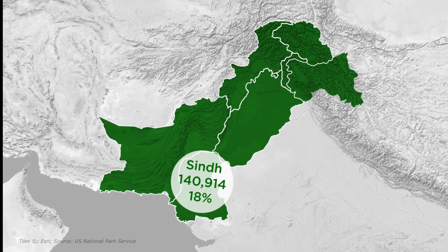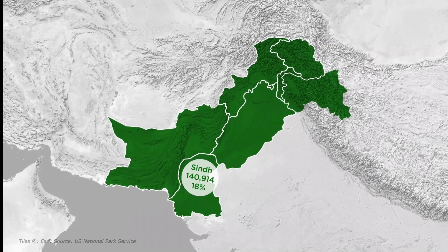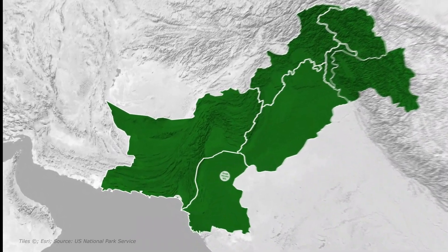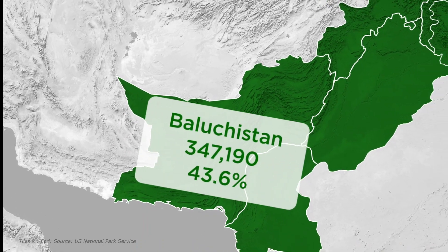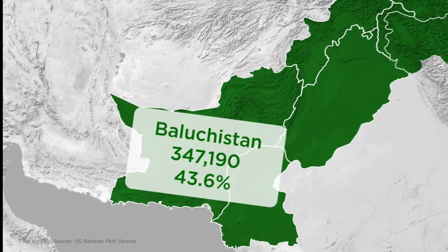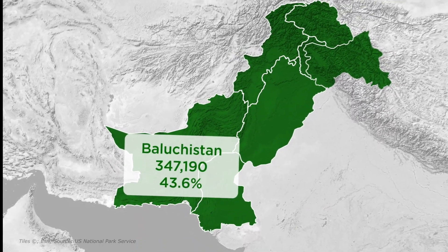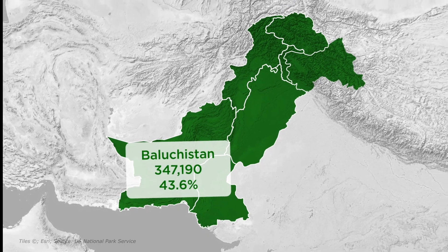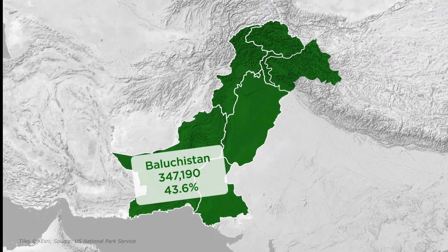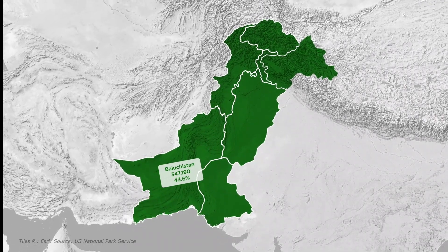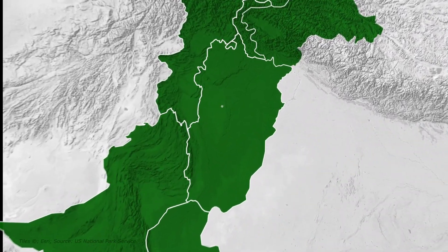Sindh's area represents 18 percent of Pakistan's total area. Balochistan's area is around 347,119 square kilometers, which is 43.6 percent of Pakistan's total area.